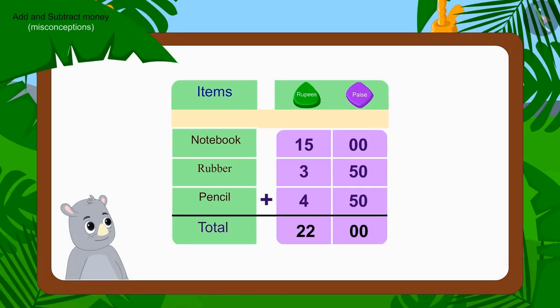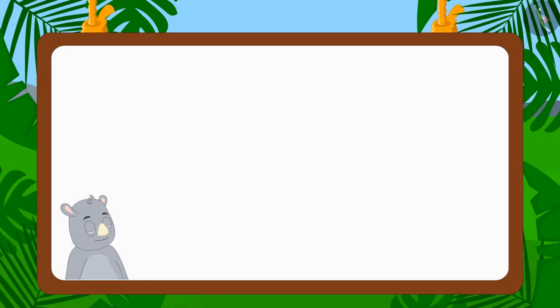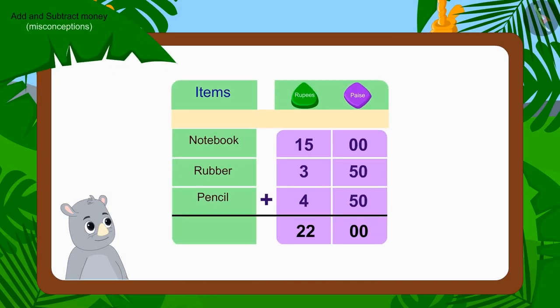Gaggu added the value of all three items in this way. Children, tell me if Gaggu's addition is correct. No, Gaggu has done the addition wrong. Kids, can you tell what mistake has Gaggu made?